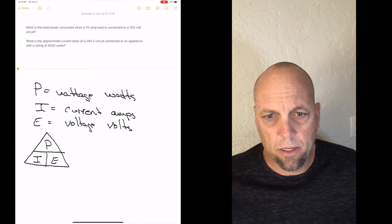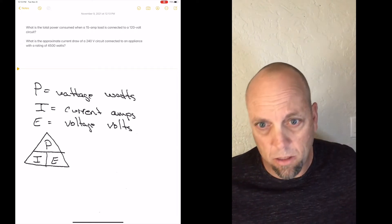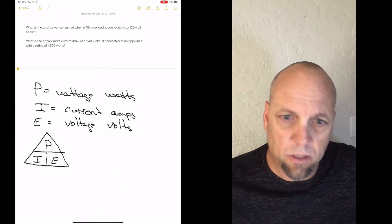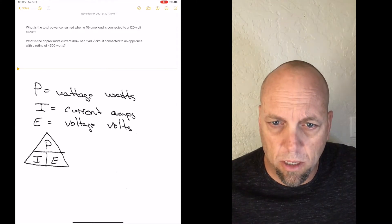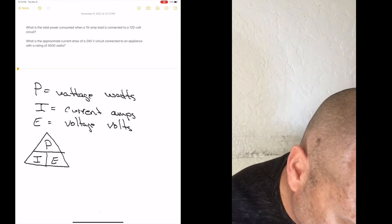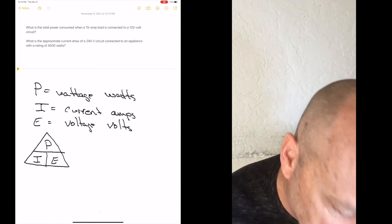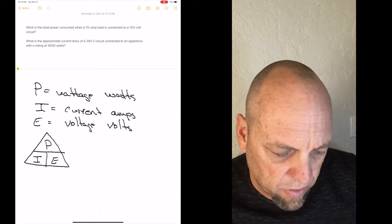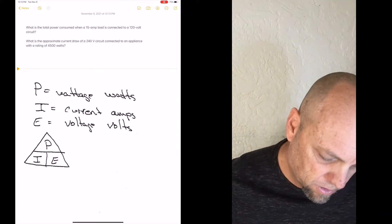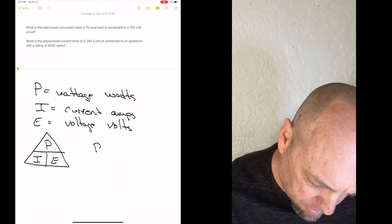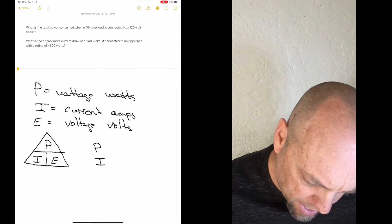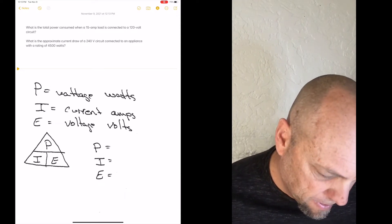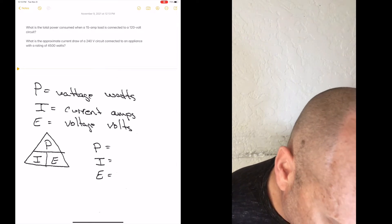With that you can figure out six of the formulas. So let's go to this first question up on top. What is the total power consumed when 15 amp load is connected to a 120 volt circuit. So P, I, and E is what we need to use.